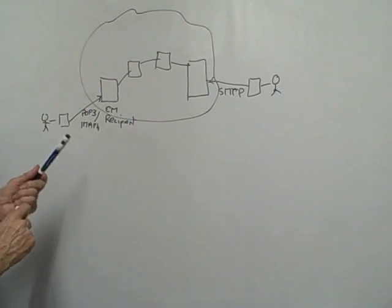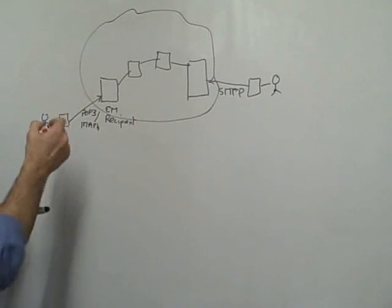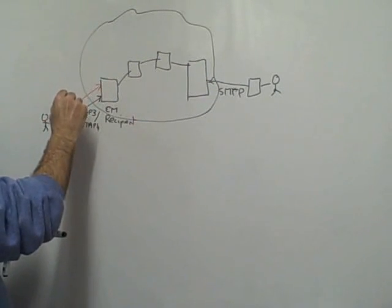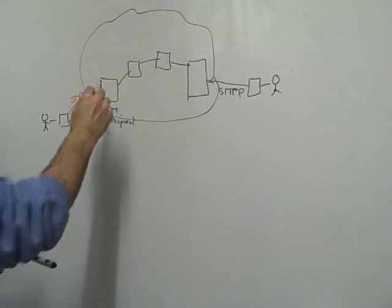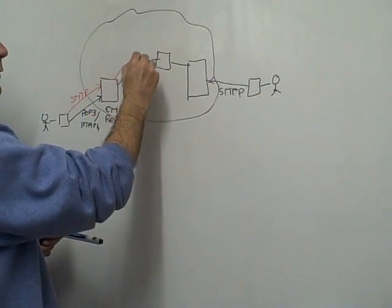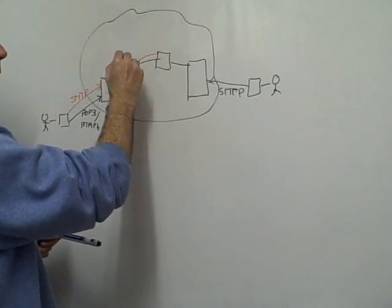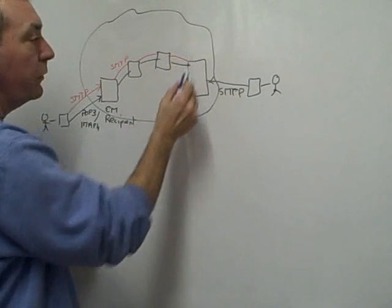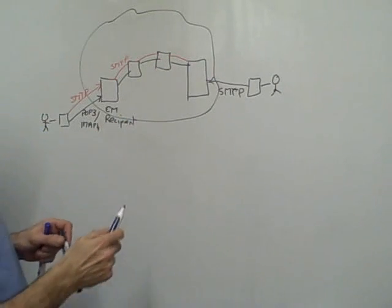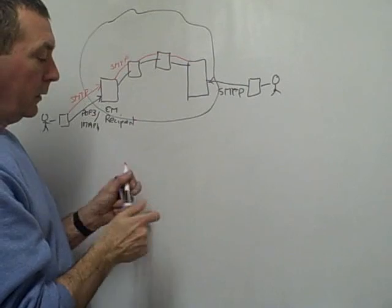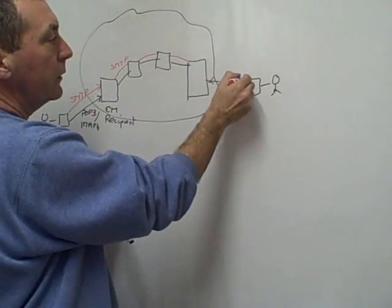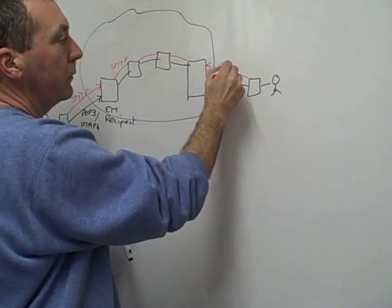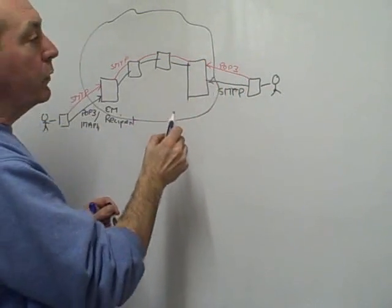Okay, so now we've got the email. What happens if he wants to reply? Well, he connects to the email server using SMTP and sends a reply. The reply gets transferred across the internet, and this is using SMTP across the internet, and it arrives now at the email server of the recipient.